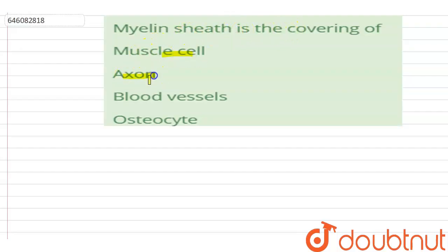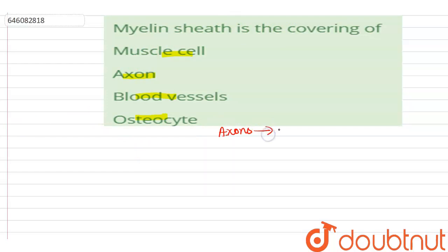The question is: myelin sheath is the covering of — and the options are muscle cell, axon, blood vessels, and osteocytes. The answer is axons of neurons, which are the cells of the nervous system.